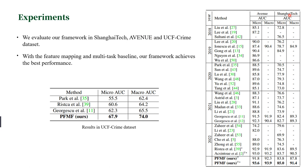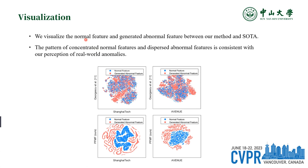We evaluate model performance on three benchmark datasets: ShanghaiTech, Avenue, and UCF-Crime. We follow the official settings for ShanghaiTech and Avenue. For UCF-Crime, we use human-related anomalies for evaluation. Our method achieves excellent performance, better than existing methods. We also visualize the generated feature distribution, and the generated abnormal features of the proposed method show clearer boundaries compared with existing methods.